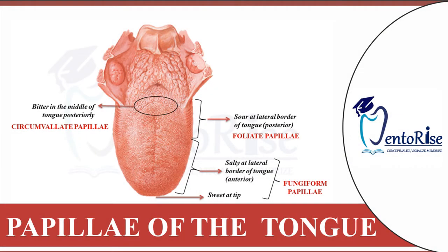The tongue is a muscular organ situated in the floor of the mouth, associated with the functions of taste, speech, chewing, and deglutition. On observing the surface of the tongue closely, we note that the surface of the tongue is not smooth; rather it has a characteristic roughness. This roughness is because of different types of papillae that are present on the surface of the tongue.